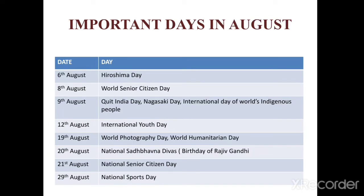Important days in August: 6th of August is Hiroshima Day. 8th of August is World Senior Citizen Day. 9th of August is Quit India Day, Nagasaki Day, and International Day of the World's Indigenous People. 12th of August is International Youth Day. 19th of August is World Photography Day and World Humanitarian Day.